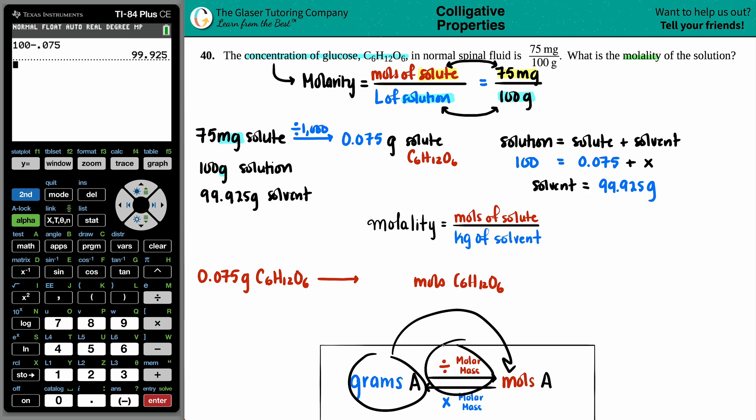Grams to moles, we always divide by the molar mass. So let's go on the periodic table and find out what the molar mass of sugar is, of the glucose. So we got six carbons,